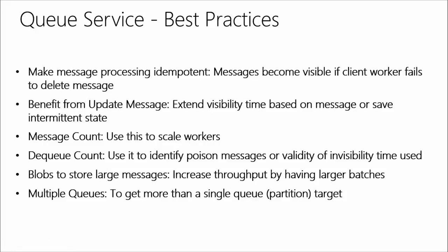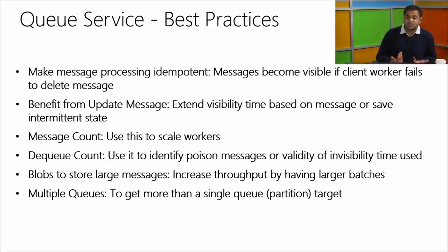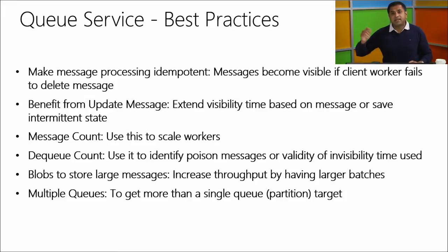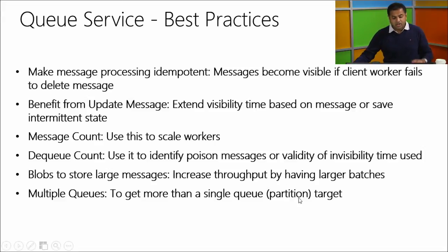Queue best practices: make message processing idempotent — messages become visible again if a client worker fails to delete them, so you need to handle seeing the same message again. Use update messages to store state so you don't have to redo your process flow. Use message count to scale workers, dequeue count to identify poison messages. For large messages — you can store up to 64K in queue messages — if you need larger, store the payload in blob and put the index in the queue message. Use multiple queues since a queue is a single partition.